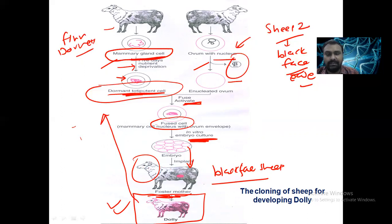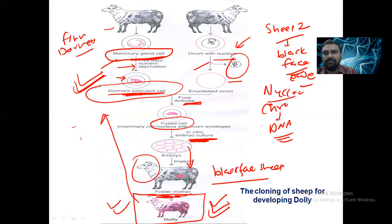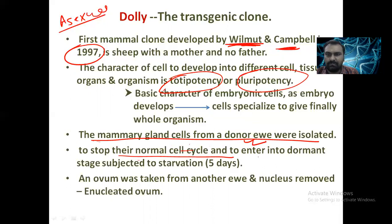Why did Dolly resemble the Finn Dorset sheep? Because the nucleus was donated by the Finn Dorset sheep. As we know, the nucleus contains genetic material — chromosomes and DNA — which carries heritable characters. The mammary gland cell from the Finn Dorset had its nucleus intact, and to stop the normal cell cycle and enter a dormant state, it was subjected to starvation for five days.